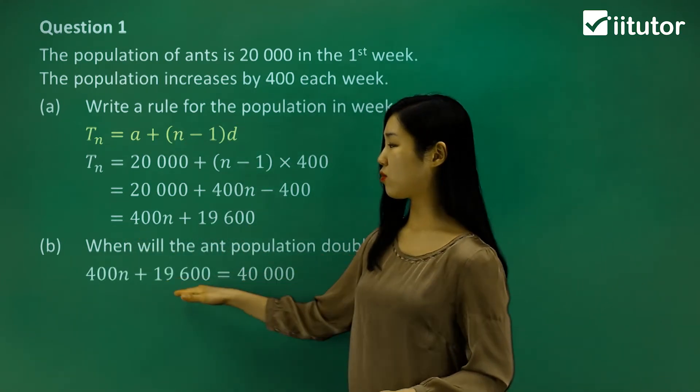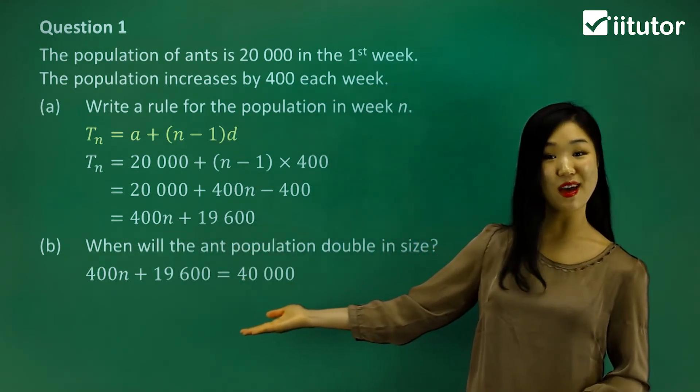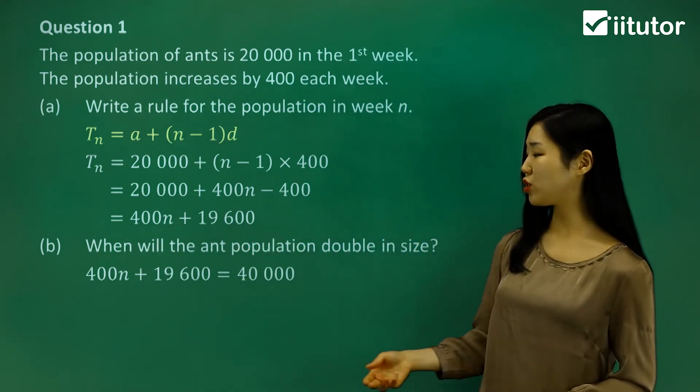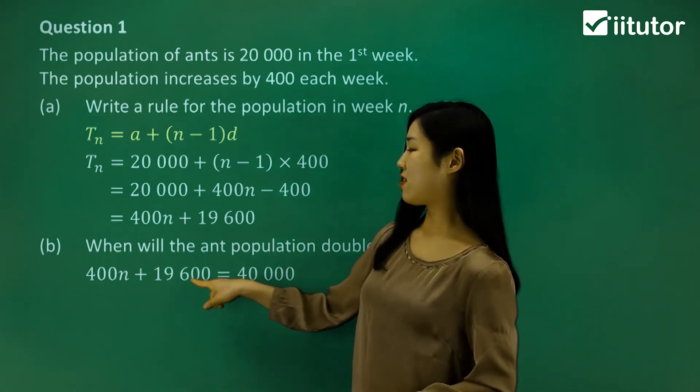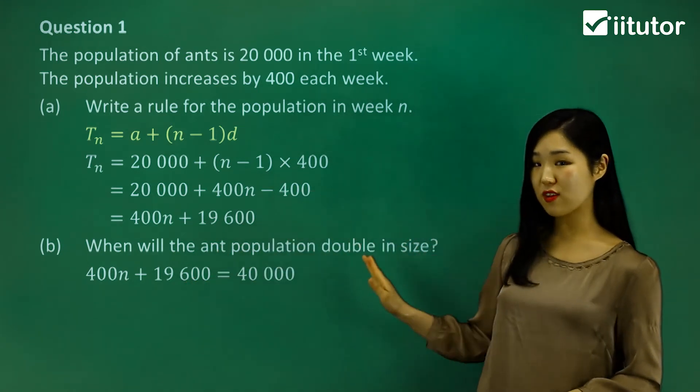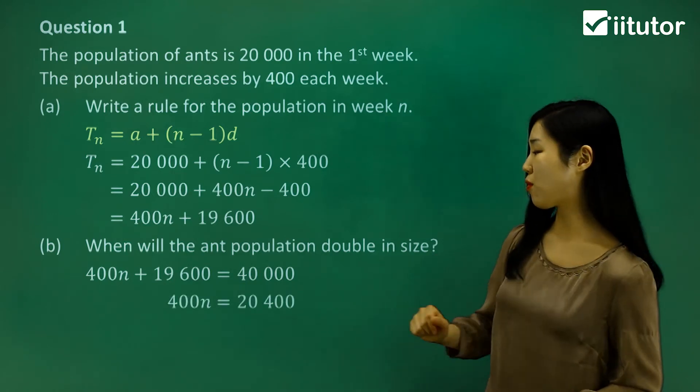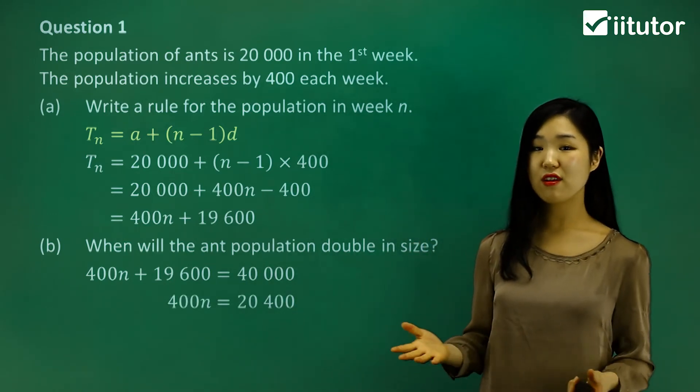I'm just going to use the simplified form. We make that equal to 40,000 and solve for n. Subtract 19,600 from both sides, and you'll get 20,400.